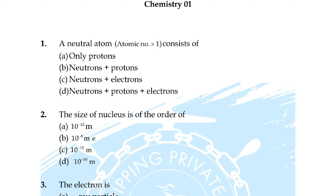Question number two: the size of the nucleus is of the order of — option A: 10 to the power minus 12 m, B: 10 to the power minus 8 m, C: 10 to the power minus 15 m, option D: 10 to the power minus 10 m.